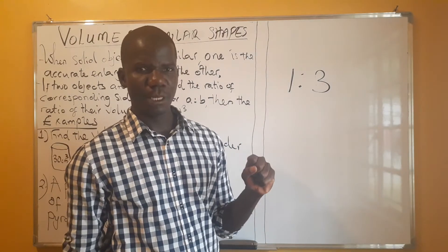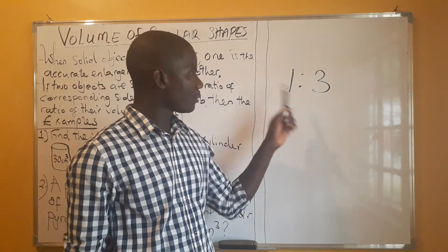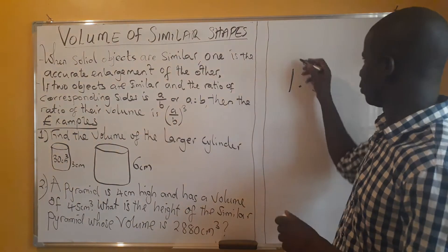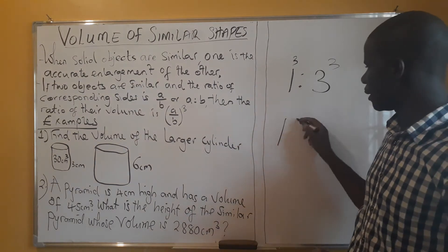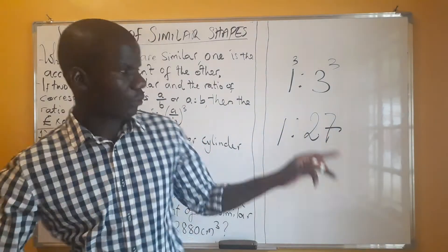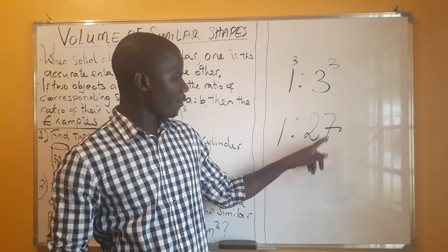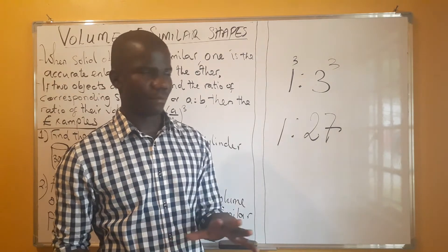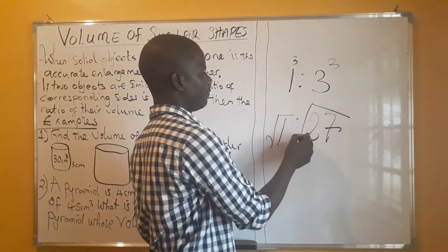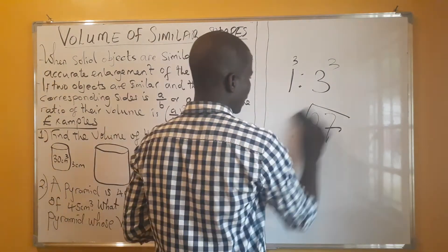Now we're looking at volume. The original ratio of similar objects is 1 to 3. When we find the ratio of volume, we raise each term to the power of three, giving 1 to 27. If you are given the volume ratios and need to go back to the original ratios, you find the cube root.